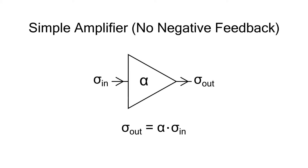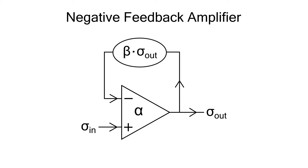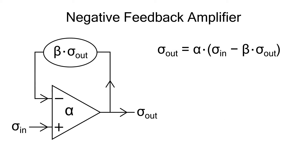A simple amp with no negative feedback is just a gain block with a constant multiplier — let's call it alpha. So your output signal is alpha times the input signal. When you add negative feedback, what you do is take a fraction of the output signal and subtract it from the input signal. So now your output signal is alpha times the input signal minus the fraction of the output signal.